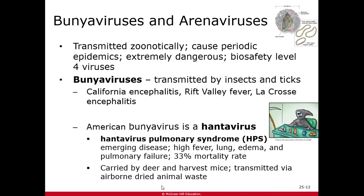Also in the enveloped negative sense single-stranded RNA group are the bunyaviruses and arenaviruses. These are generally transmitted zoonotically — from animals to humans. Some can cause epidemics and are very dangerous, requiring biosafety level 4 with full hazmat suits. Bunyaviruses are transmitted by insects and ticks; examples found in the US include California encephalitis, Rift Valley fever, and La Crosse encephalitis.